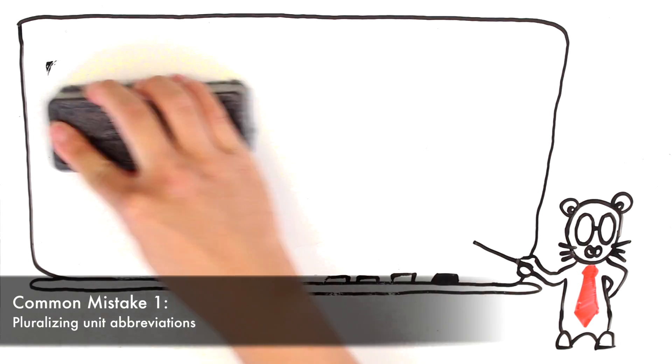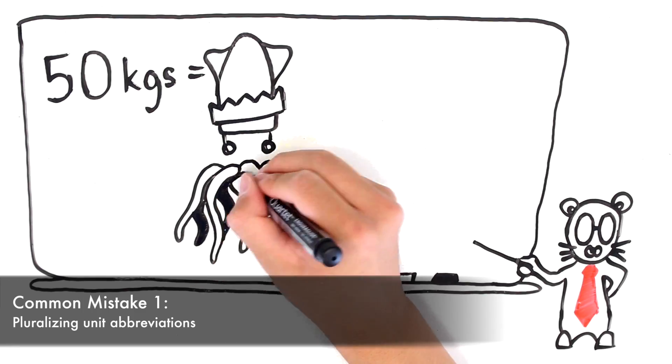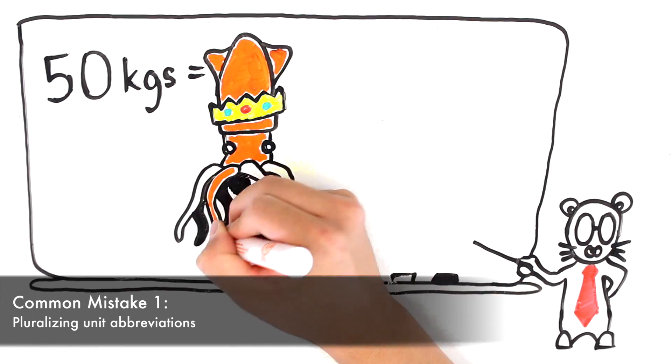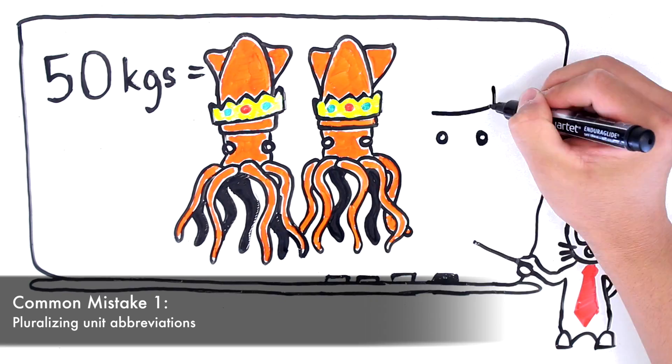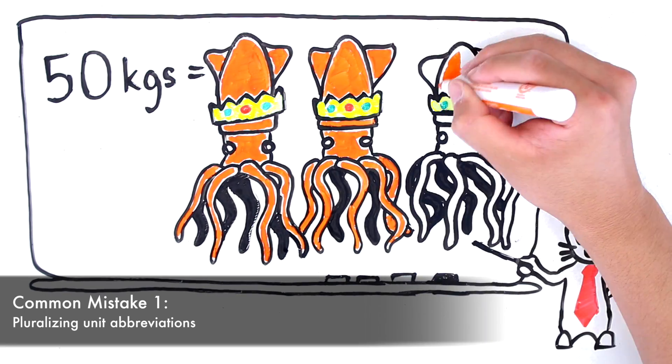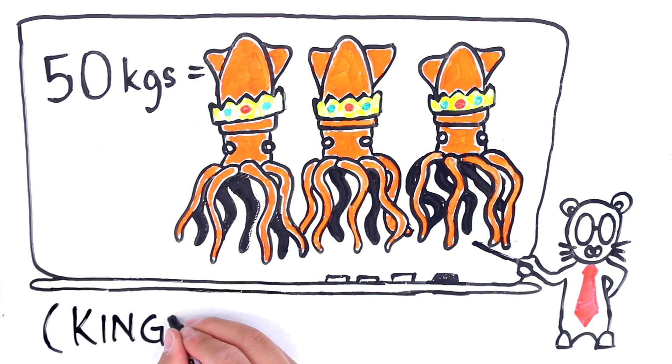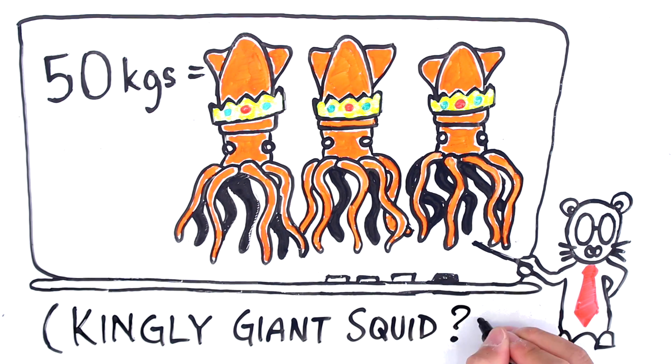And, in the case of kilograms, adding an S to the abbreviation creates something that makes no sense at all. There is no such unit as KGS. So, anyone reading this could be just as entitled to picture kingly giant squid as kilograms.